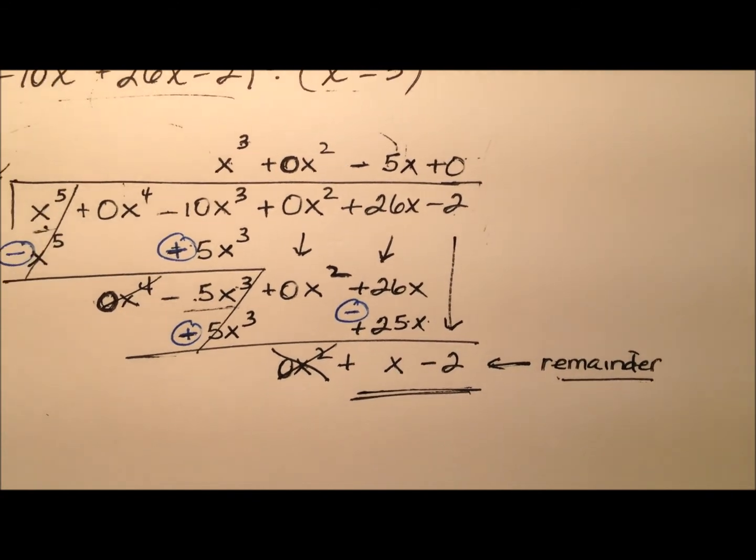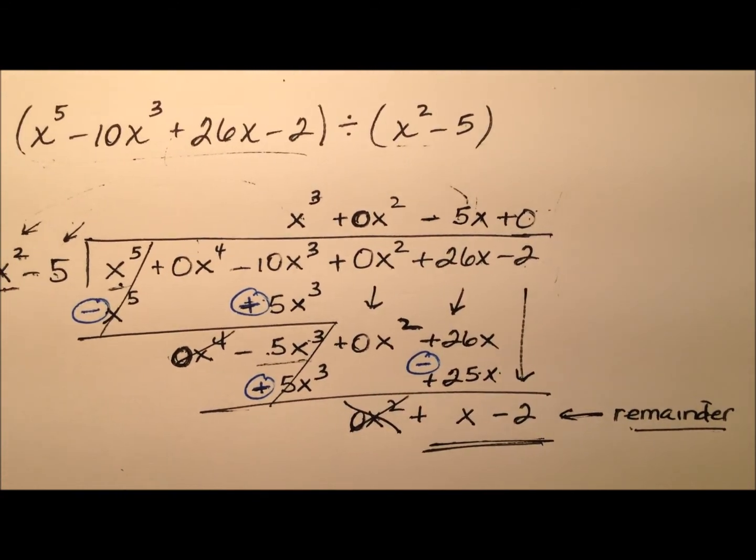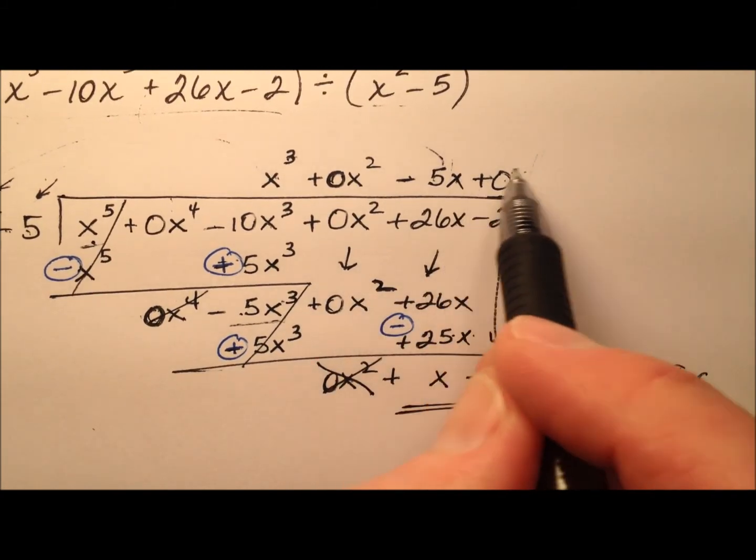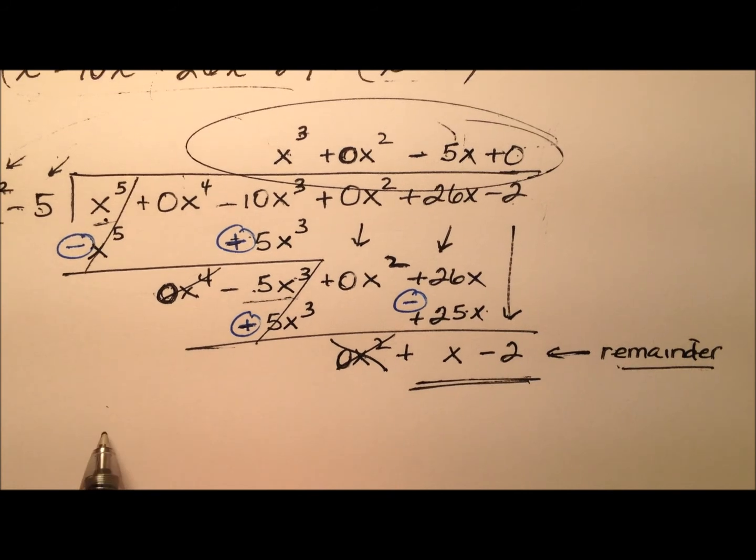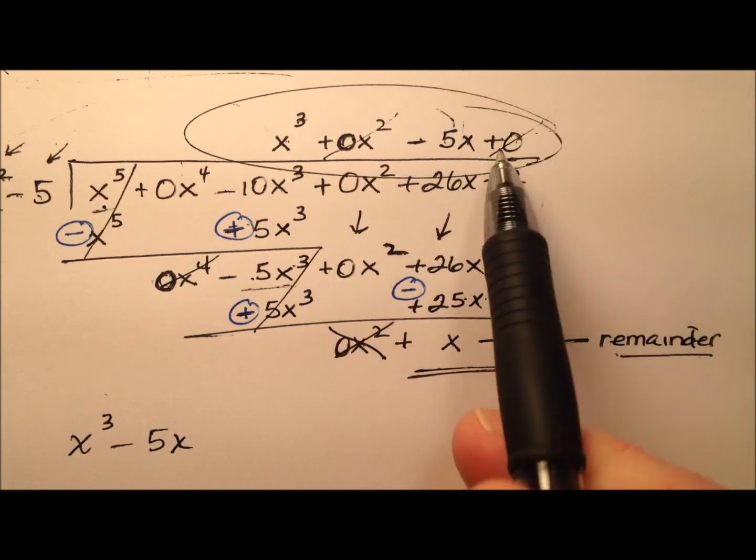Okay so yeah it does look a little squirrely when I have missing terms and I have zeros kind of all over the place and that's okay. So let's go ahead and write my final quotient then. I have my whole part which is this x cubed minus 5x and here especially there's no need to write these zeros.